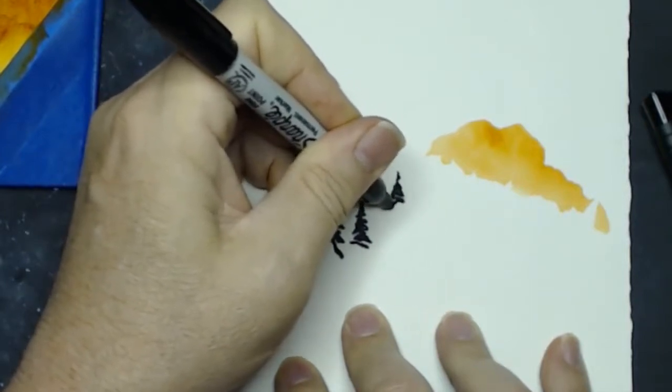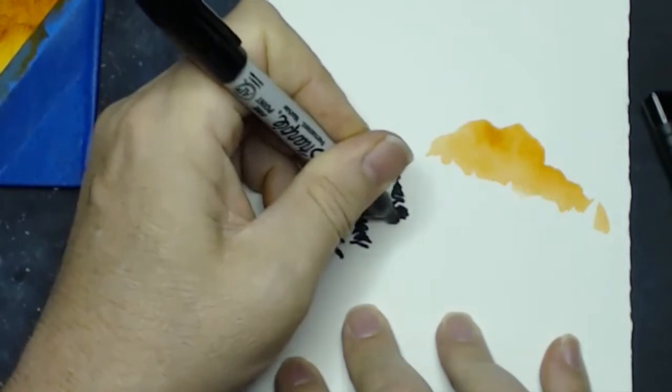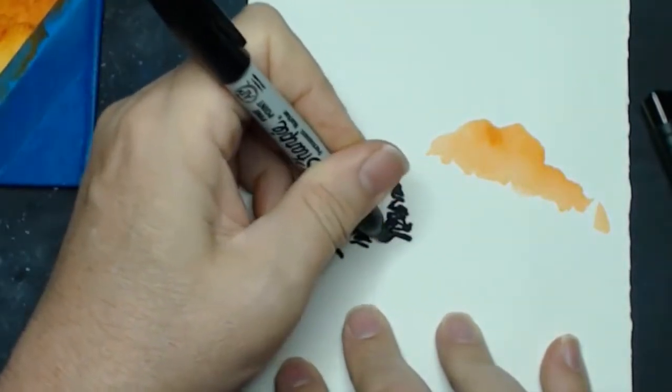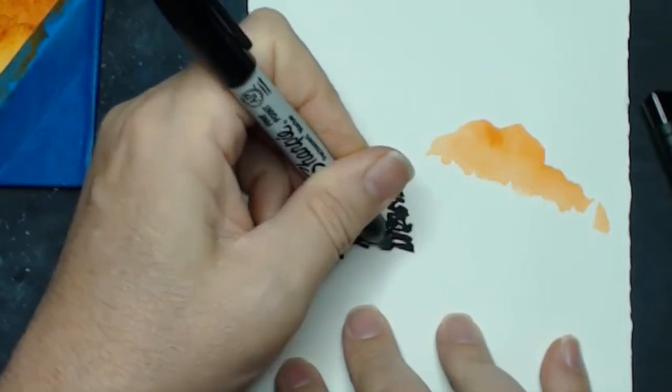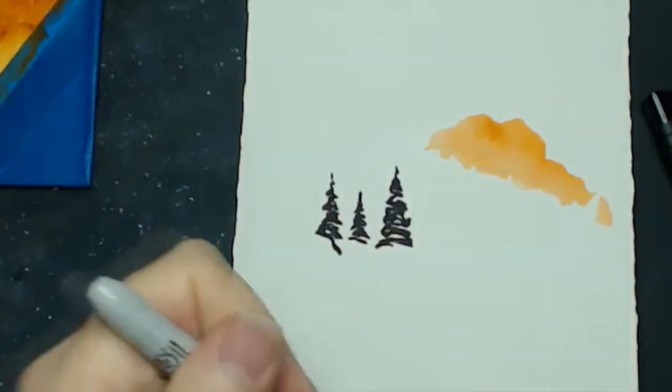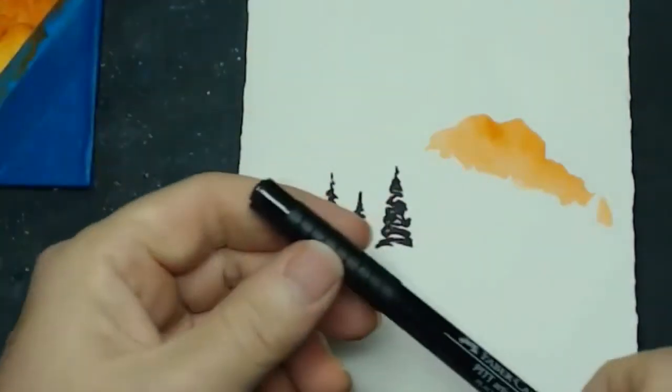I would suggest before you try this on your watercolor that you do what I'm doing here and just take a piece of paper. Doesn't even have to be watercolor paper necessarily. Get your sharpie marker out and just practice drawing these.